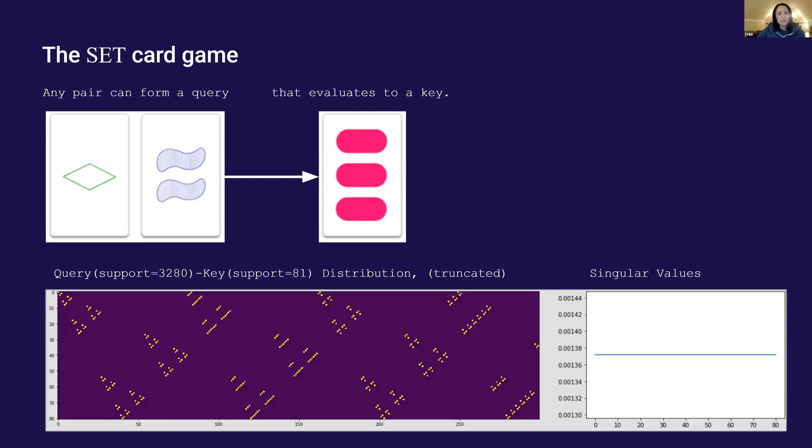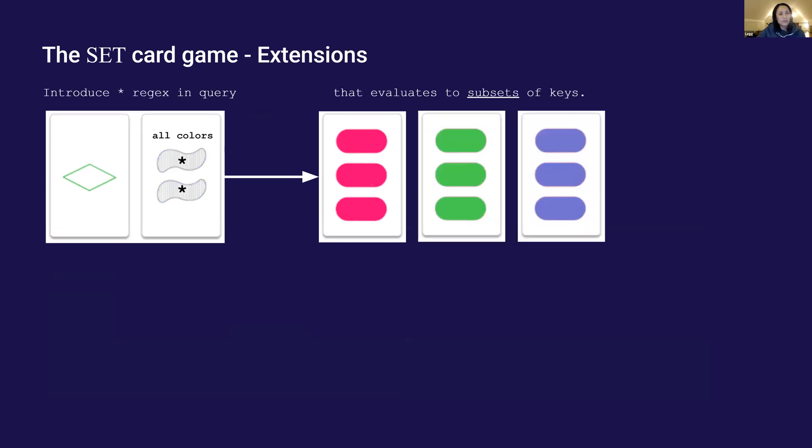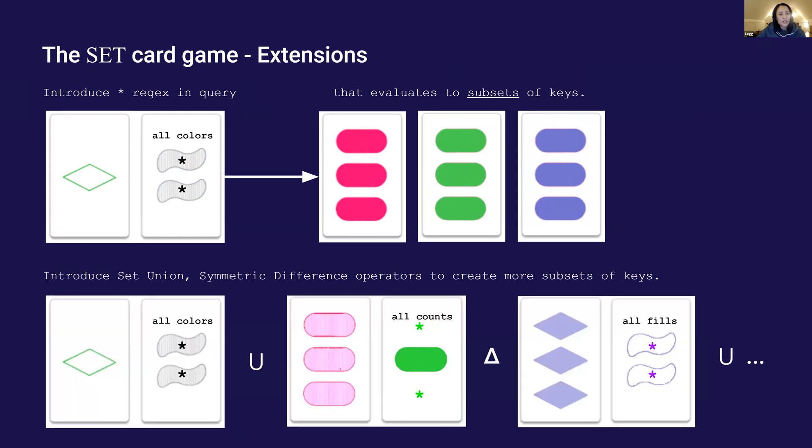This query key matrix has a regular pattern, but it is still full rank. To extend this game, I introduced star regular expressions such that queries can evaluate to subsets of key cards. In addition, I introduced the set union and symmetric difference operators to make the queries and return subsets even more dynamic.